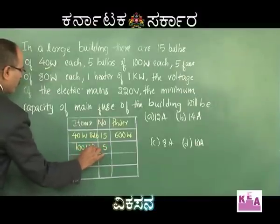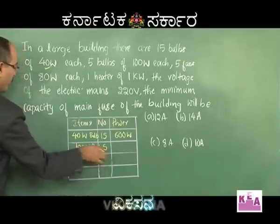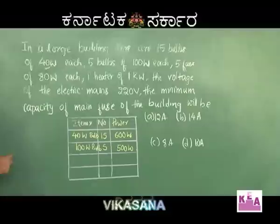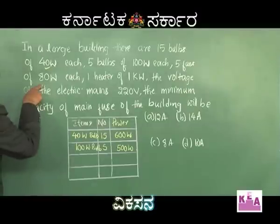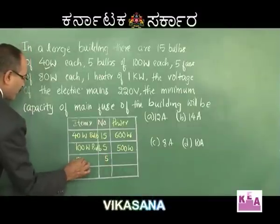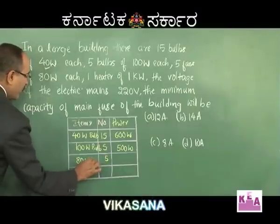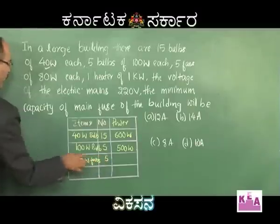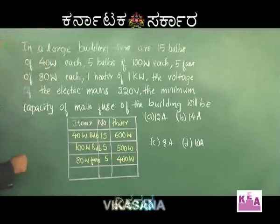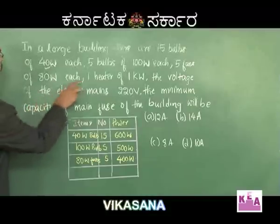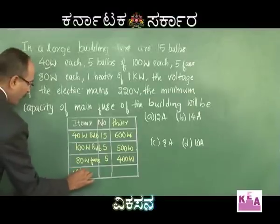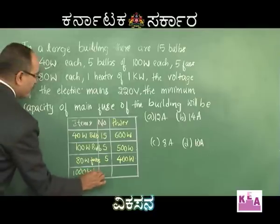5 into 100 gives 500 watts for the 100 watt bulbs. Next: 5 fans of 80 watt each — 5 × 80 = 400 watts. Then 1 heater of 1 kilowatt = 1000 watts.